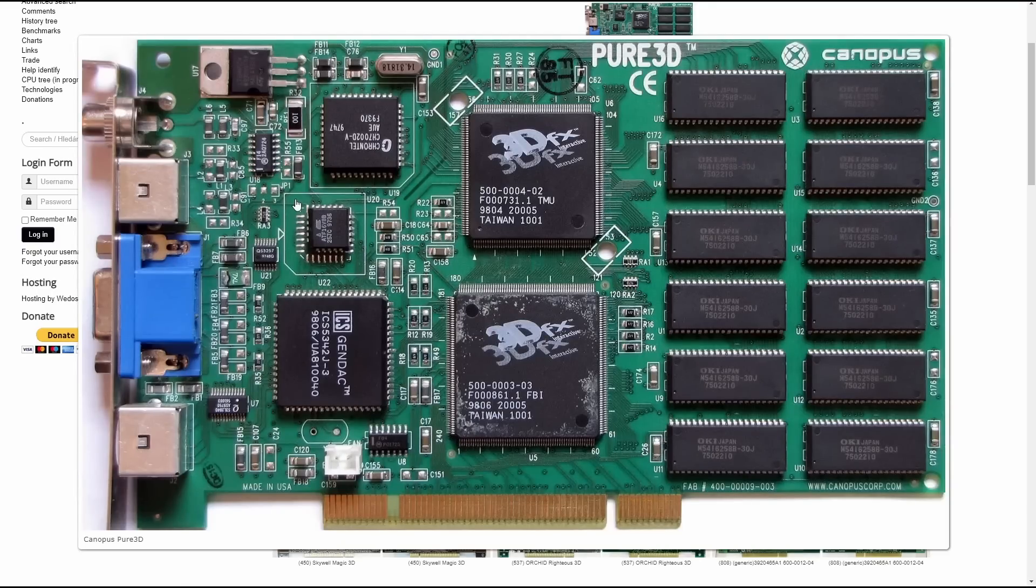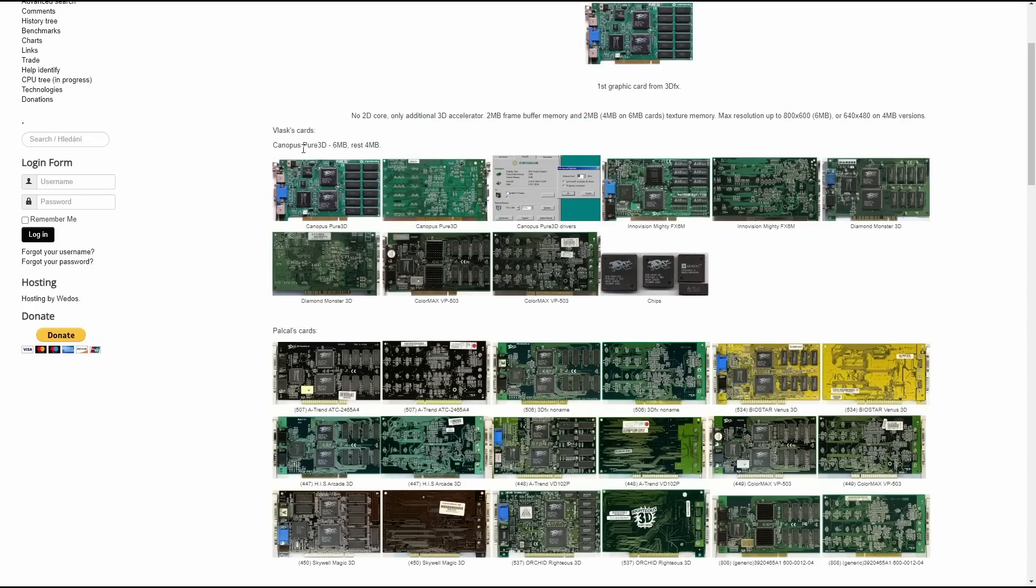If you are like me, then you probably thought that the first release of the Voodoo Accelerator came with 4 MB of memory. That's it, 4 MB. No more, but also no less. But there were a few, probably very expensive exceptions.